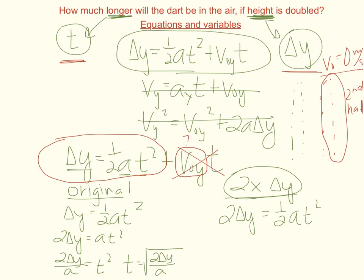So I'm going to rearrange to solve for time. So now I have two times two delta y divided by acceleration is equal to time squared. And so we get an equation for time is equal to the square root of four delta y over acceleration. So now I have these two equations. I want to know how they compare.